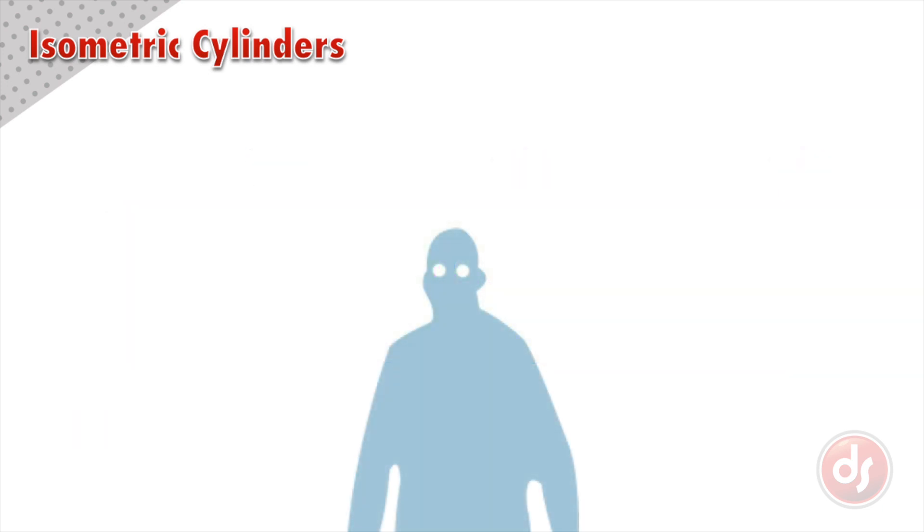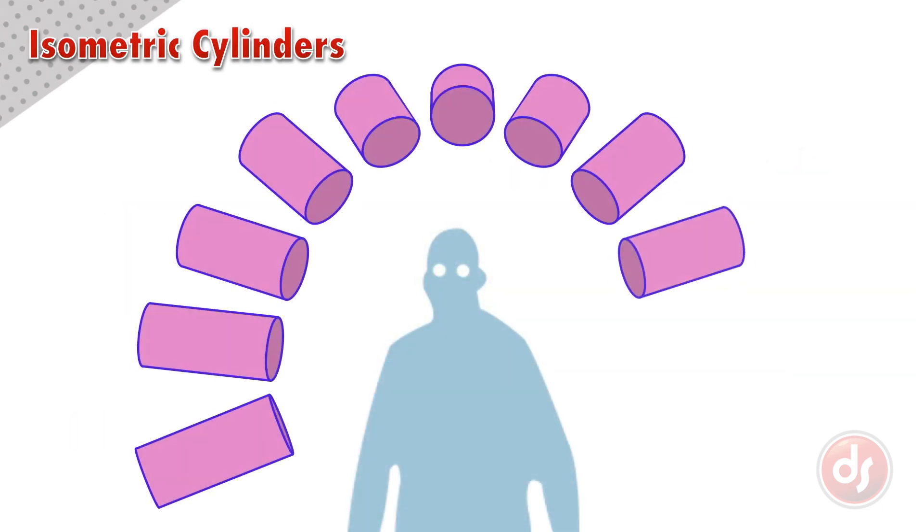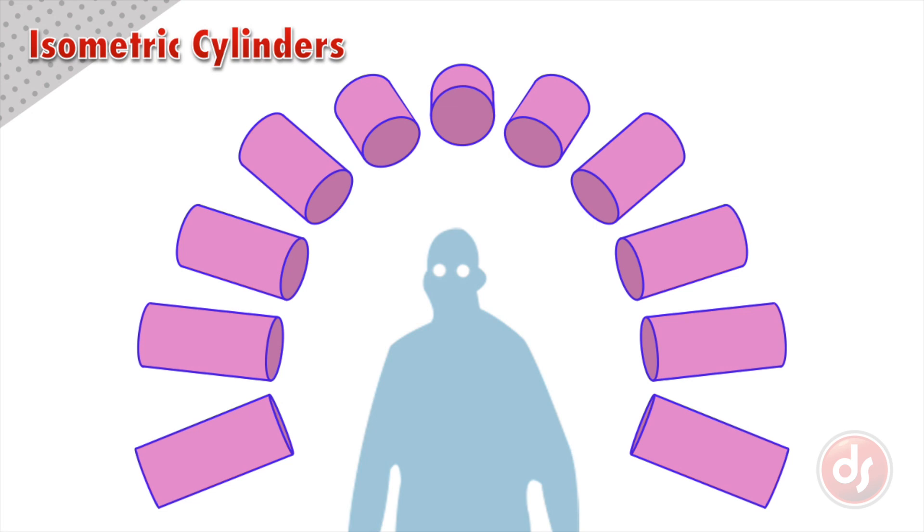By changing the length of the cylinder and making the degree of the ellipse more open or closed, we can give the sense that the cylinders are moving in space.